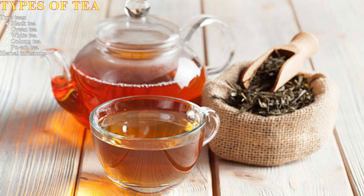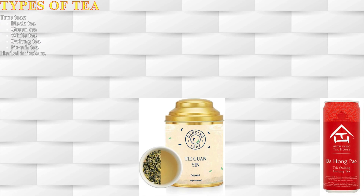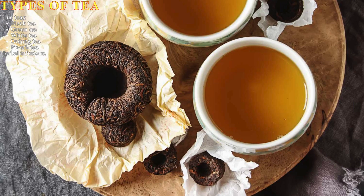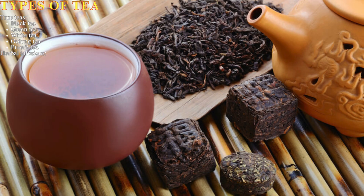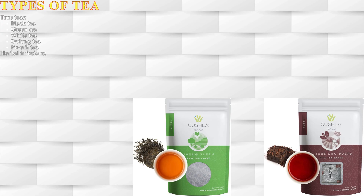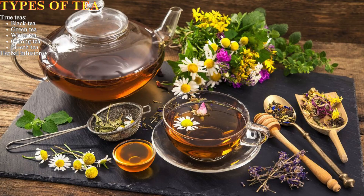Popular oolong teas include Tieguanyin and Da Hongpao. Pu-erh tea is a fermented tea where the leaves are piled and allowed to age, developing a strong earthy flavor; it is traditionally compressed into cakes or bricks, with two main types: sheng (raw) and shu (ripe) pu-erh. Herbal infusions are not technically teas but are brewed in a similar way.